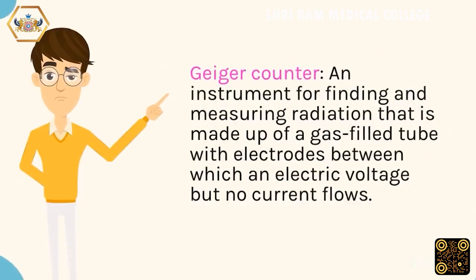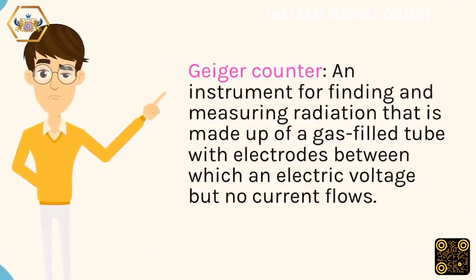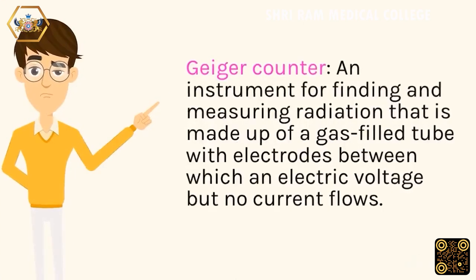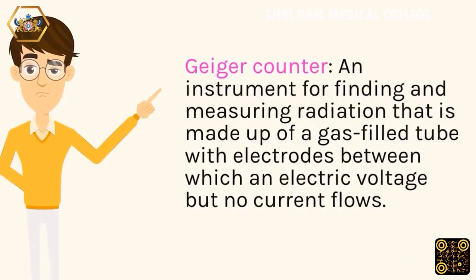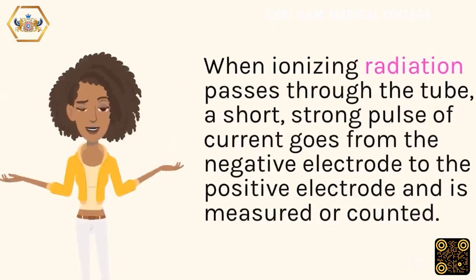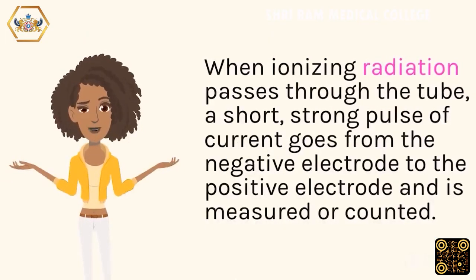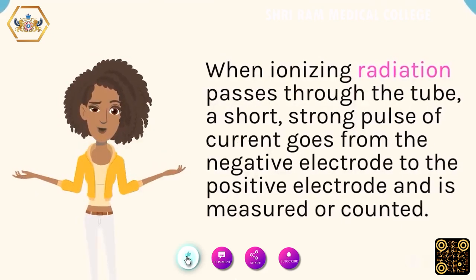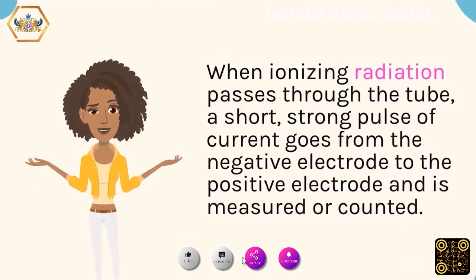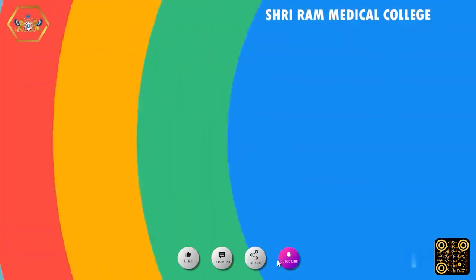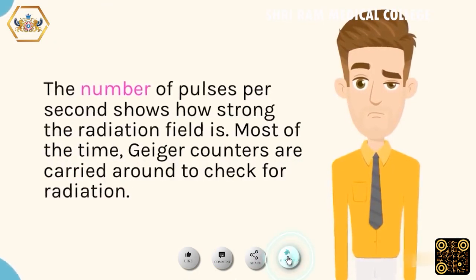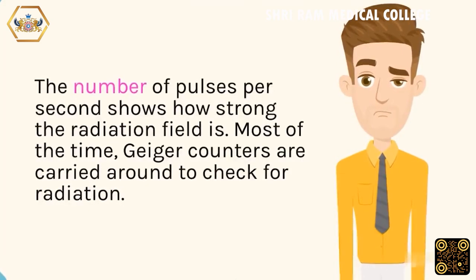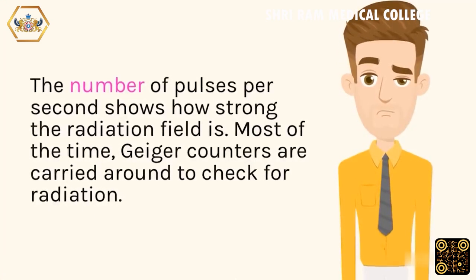Geiger counter: an instrument for finding and measuring radiation, made up of a gas-filled tube with electrodes between which an electric voltage but no current flows. When ionizing radiation passes through the tube, a short, strong pulse of current goes from the negative electrode to the positive electrode and is measured or counted. The number of pulses per second shows how strong the radiation field is. Most of the time, Geiger counters are carried around to check for radiation.